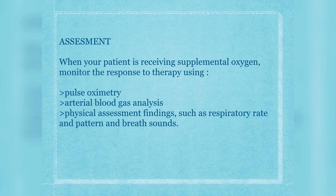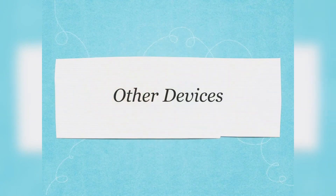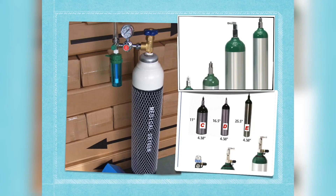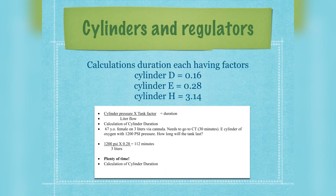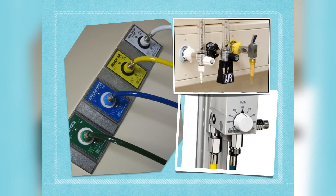Always assess and monitor the patient response to oxygen therapy using pulse oximeter, blood gases, and vital signs such as respiratory rate and heart rate. Sources of oxygen include centralized O2, cylinders and regulators — tune in for the next presentation on how to properly use an O2 cylinder — and concentrators, for hospital setup and home use.